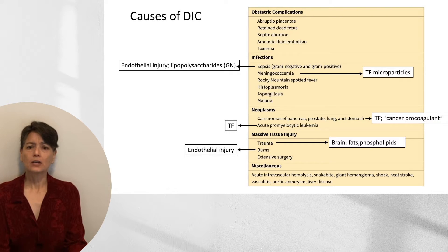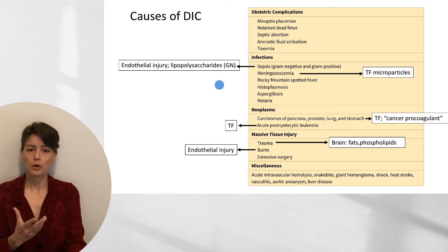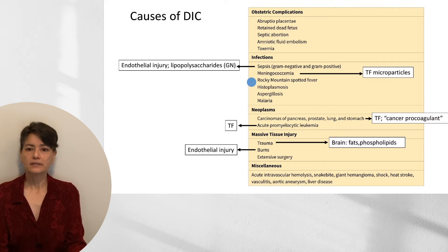Infections can cause DIC through either of the two triggers described previously. Sepsis can cause widespread endothelial injury, and gram-negative sepsis in particular can cause release of lipopolysaccharides into the circulation — a procoagulant stimulus. Meningococcemia is characterized by the release of tissue factor microparticles into the circulation, leading to DIC.